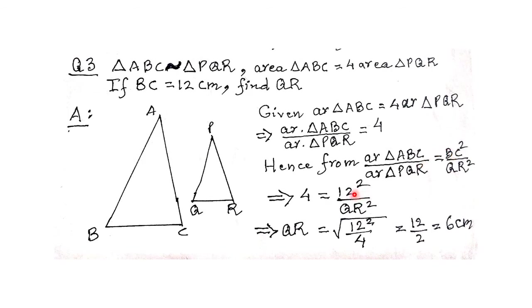We need to find QR. So QR = √(12²/4) = √(144/4) = √36 = 6 cm.